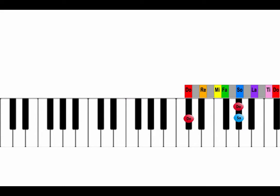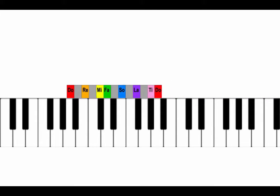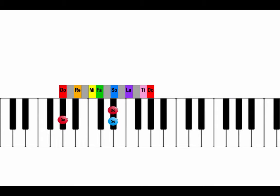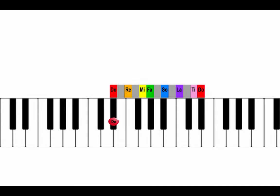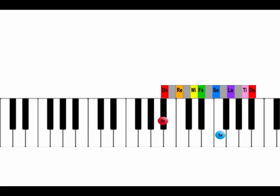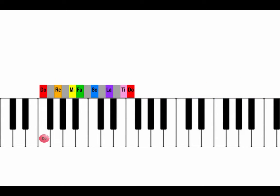C sharp to G sharp, which is also called A flat. We ran out of keyboard, so let's move the piano back down. A flat to E flat is also a fifth. From E flat to B flat is also a fifth. From B flat to F — ran out of piano again — and from F to C is also a fifth.